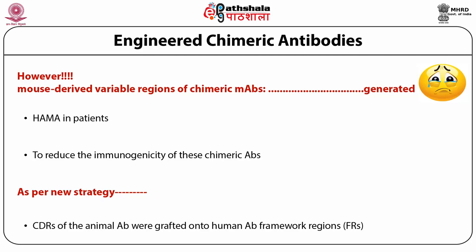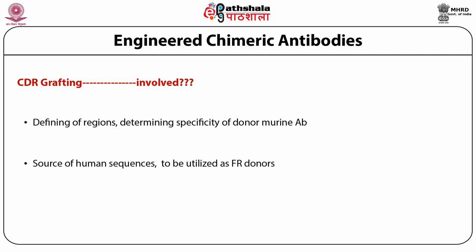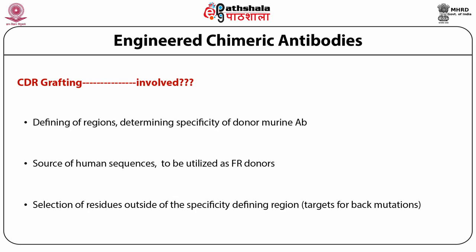CDR is the hypervariable region that contributes to the binding of an antibody to its antigen. For CDR grafting of a mouse antibody, one must define the regions determining the specificity of the donor murine antibody. Then, one must identify the source of human sequence that will serve as the framework region (FR) donor. Selection of residues outside the specificity-defining regions is also important for CDR grafting, as sometimes after grafting, back mutations in the grafted antibody are required to improve binding activity.